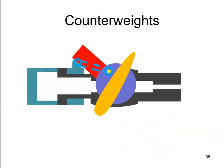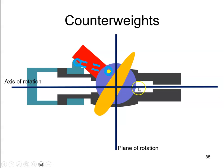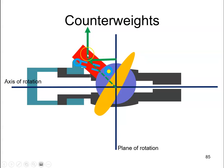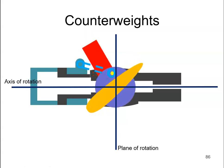So here's our propeller inside the hub. As the propeller is rotating about its axis of rotation, there will be a centrifugal force coming out through the CG of the counterweight — this is the force due to the counterweight, not the propeller itself. We just saw the vector broken down into the longitudinal and vertical component. This vertical component in particular is going to cause the counterweight to move up. So when the counterweight moves up, it pulls the blade into a more coarse position.